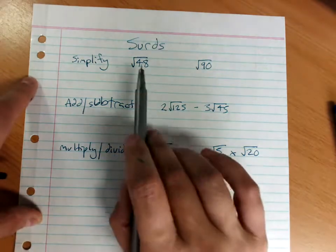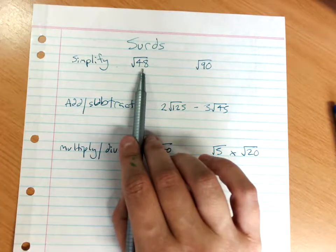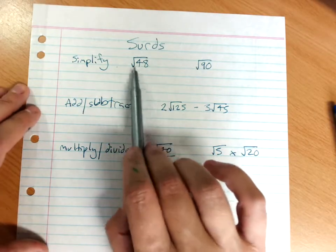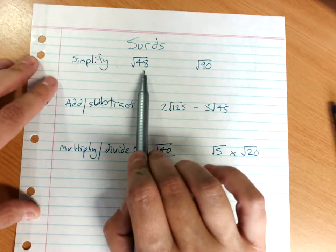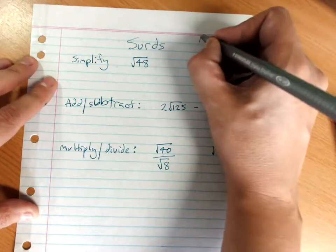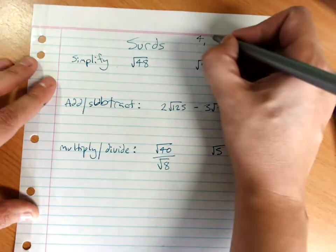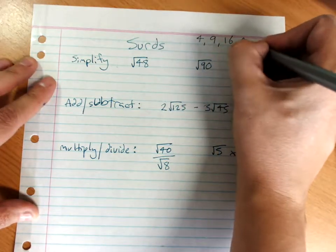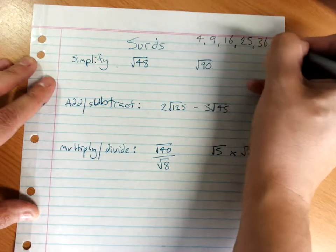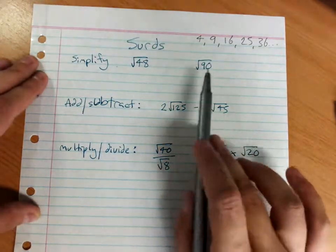To simplify them, we use factors of the number under the radical that are square numbers. So our square numbers are 4, because 2 times 2 is 4, 3 times 3 is 9, 16, 25, 36. We're looking for factors that are square numbers. Don't forget 100, people forget it a lot.